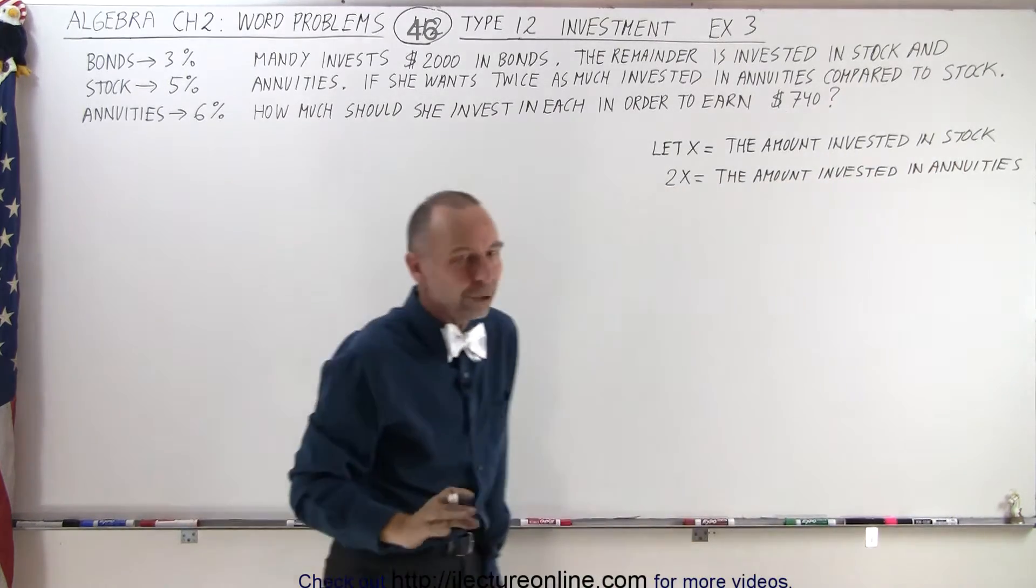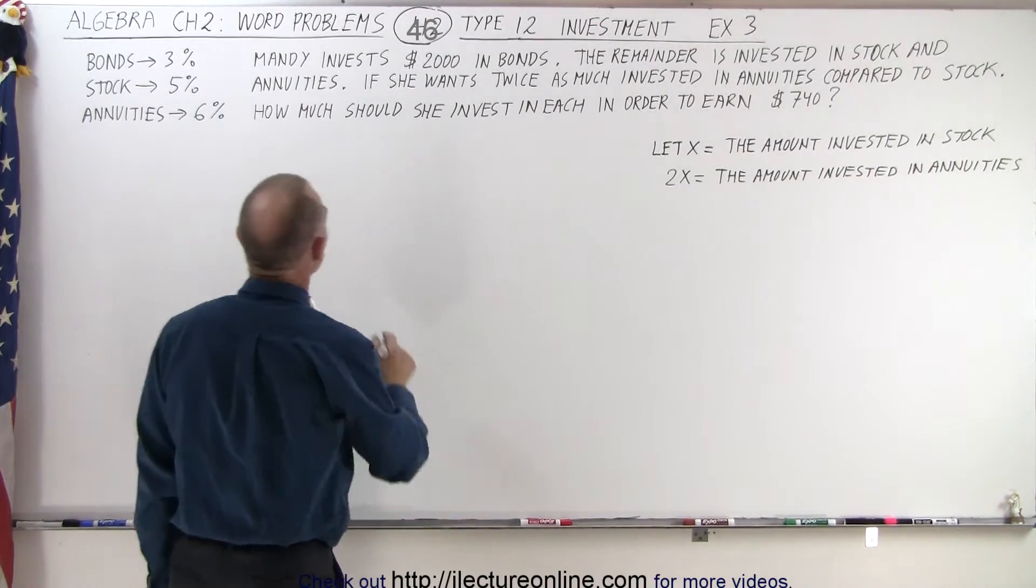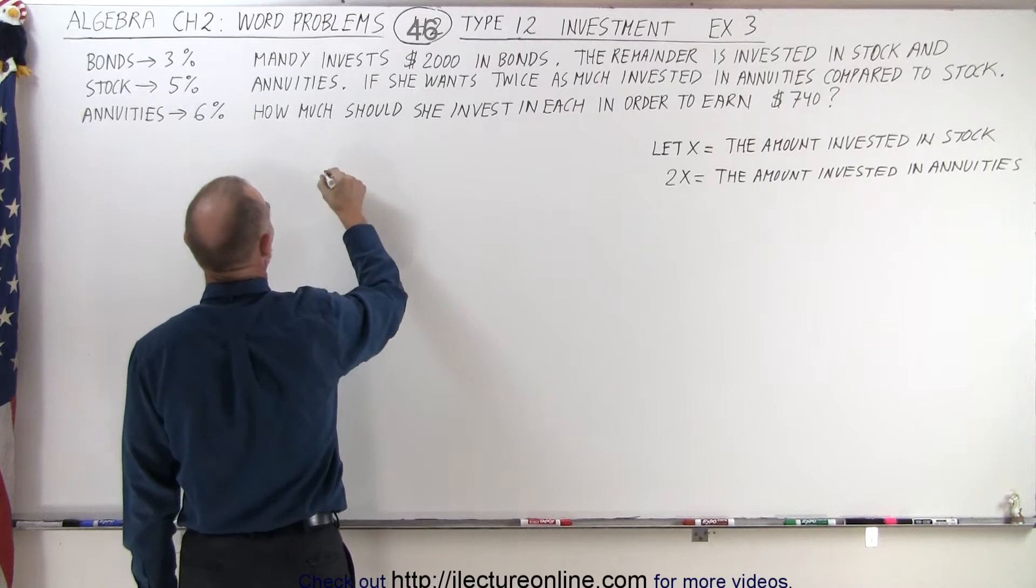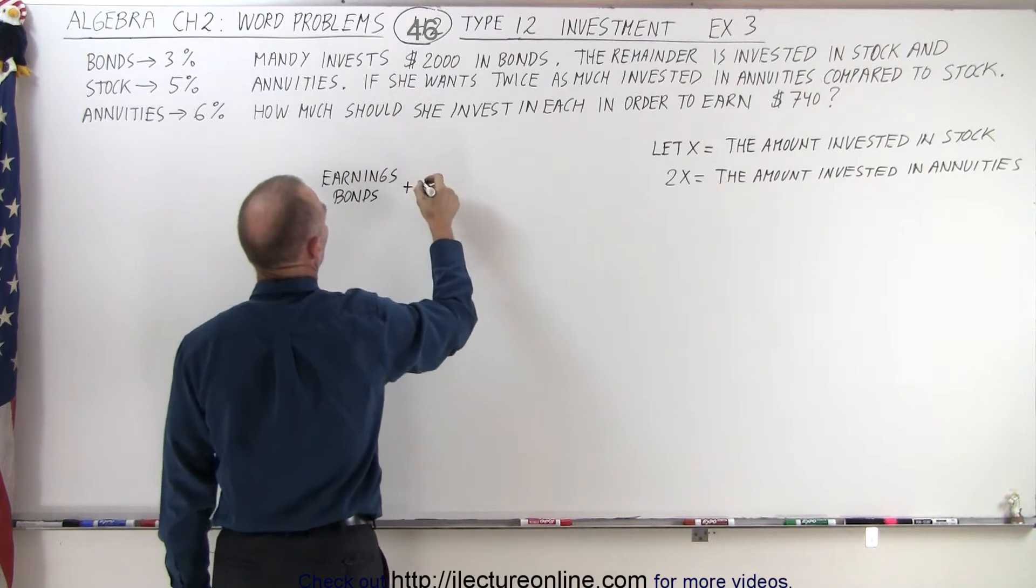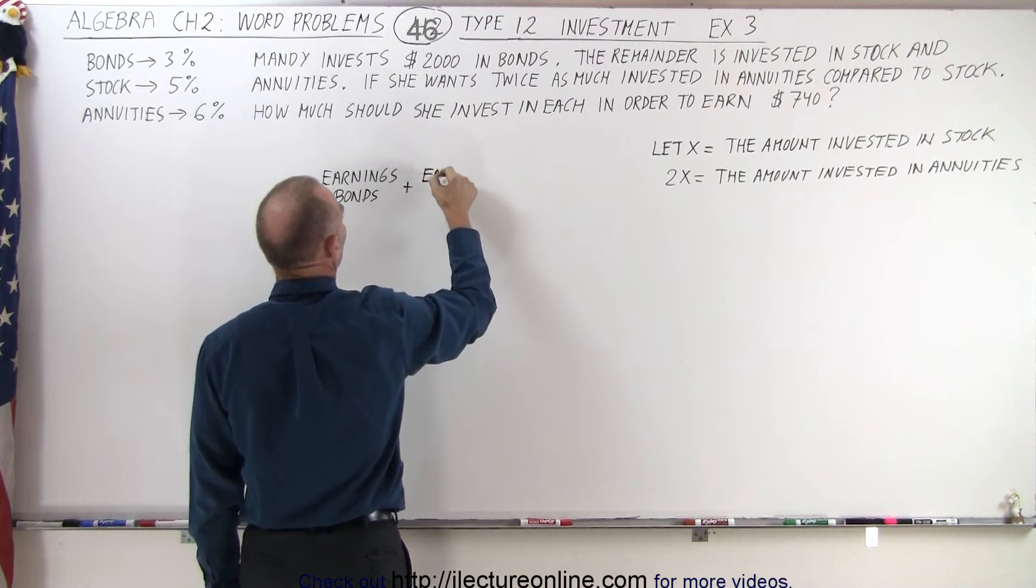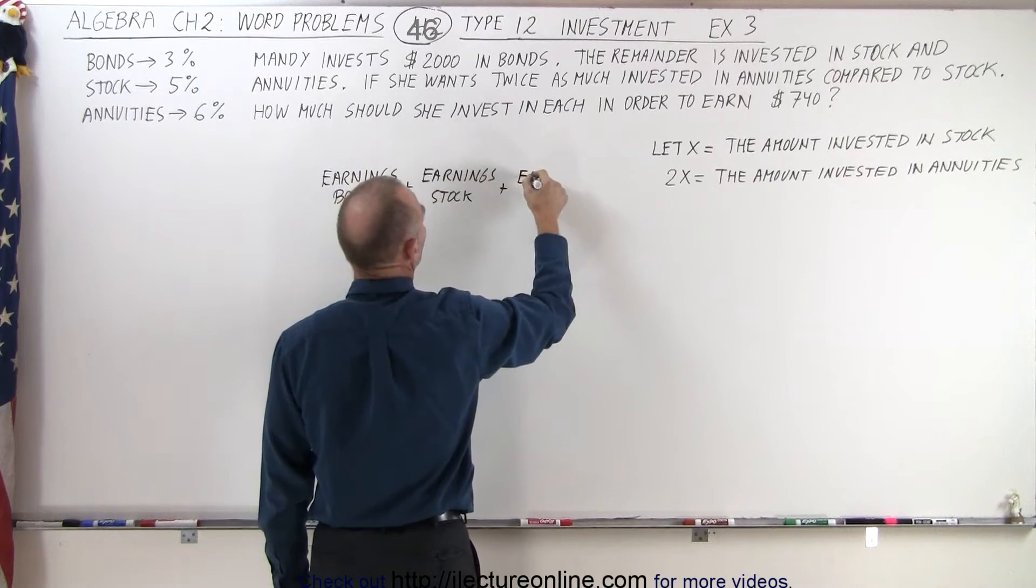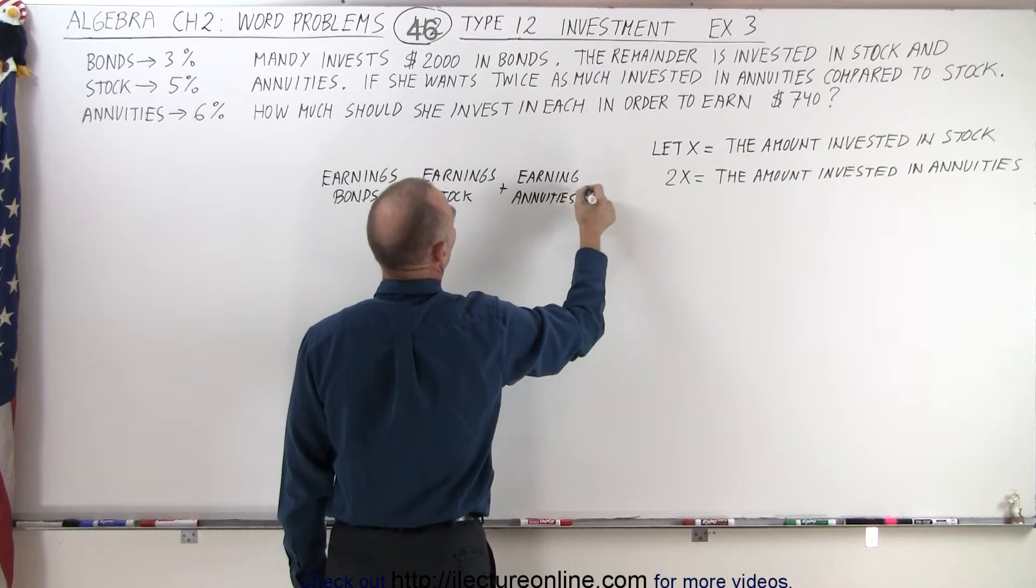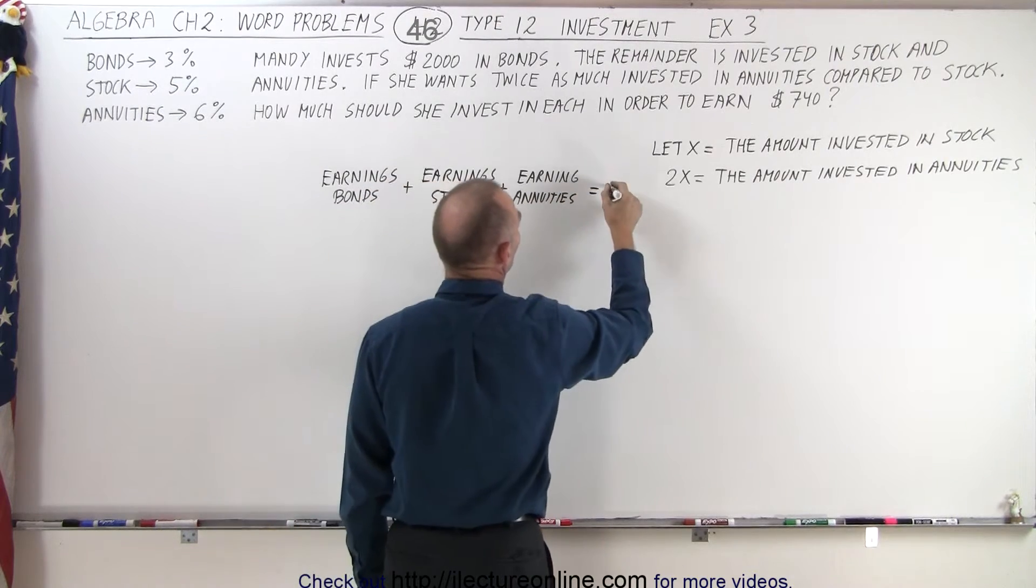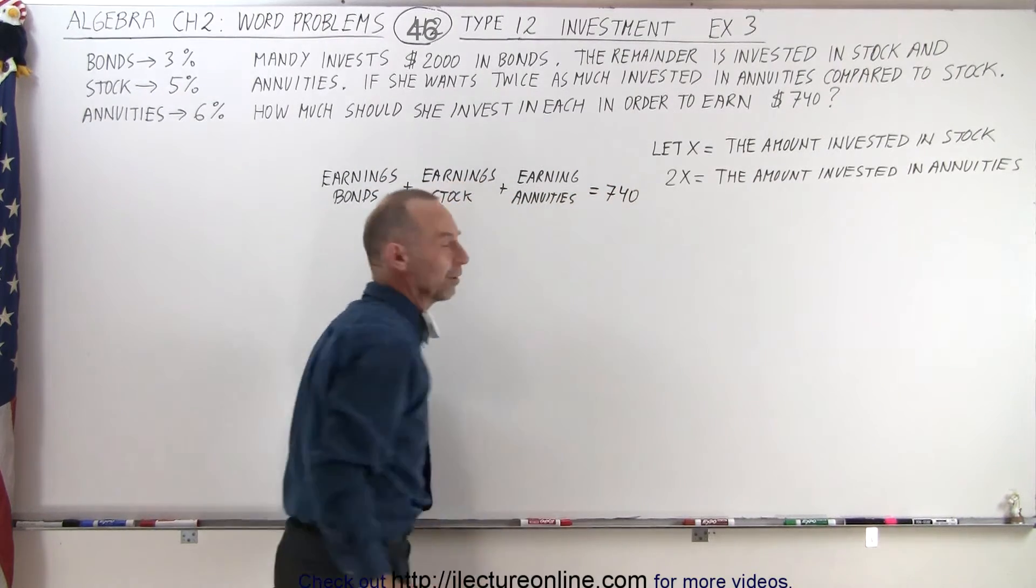Now we're going to need an equation. So earnings from the bonds, plus earnings from stock, plus earnings from annuities, must add up to the amount that she wants earned, which is $740.